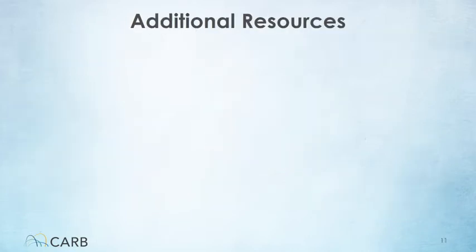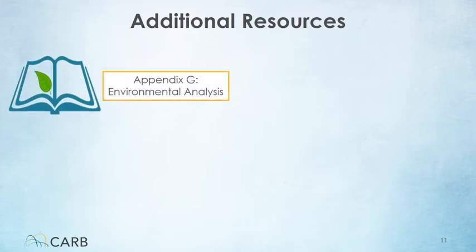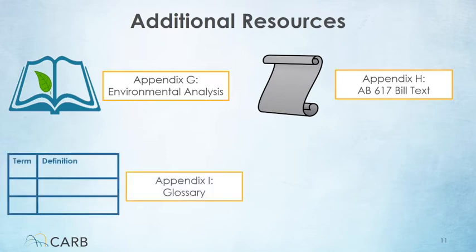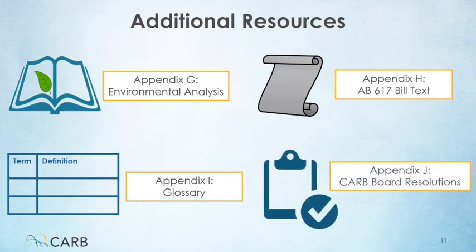The remaining appendices provide additional references and resources, including background on the environmental analysis CARB conducted on the blueprint under the California Environmental Quality Act, also known as CEQA, which requires us to consider impacts on the environment. They also include the bill text for Assembly Bill 617, a great reference for understanding the underlying program requirements and structure, a glossary that defines the terms used in this program, and the board resolutions that approve the blueprint and the first year of community selection.